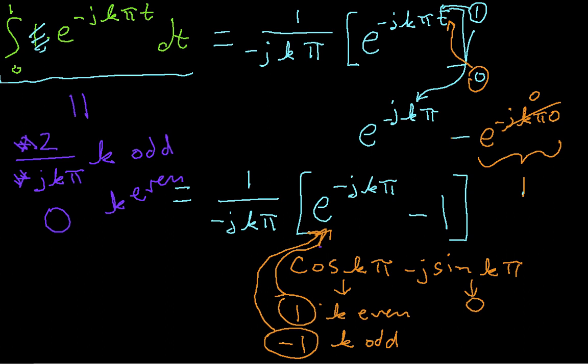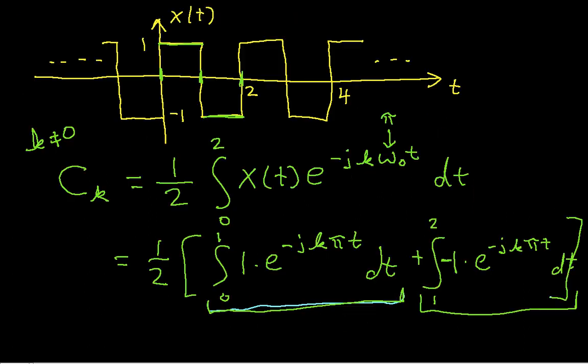So we can go back to our original square wave, and we can now say that this guy is going to be 1/2 times 2 over jkπ plus 2 over jkπ. And this is the case where k is odd. Or it will be 0 when k is even.